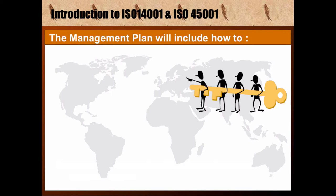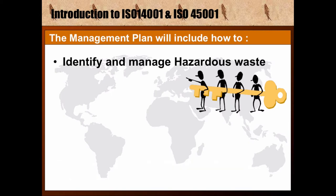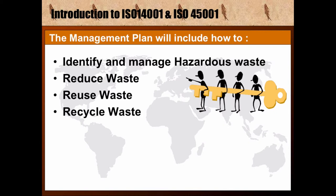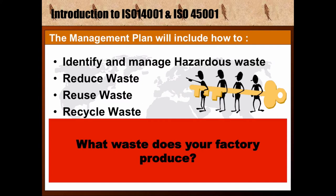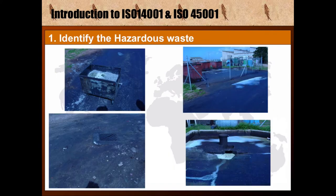The management plan will include how to identify and manage hazardous waste, reduce waste, reuse waste, and recycle waste. What waste does your factory produce? First, identify the hazardous waste — for example, a swarf container leaking coolant, or a poorly maintained bund wall failing to prevent the coolant from contaminating the grass and filtering into the groundwater.